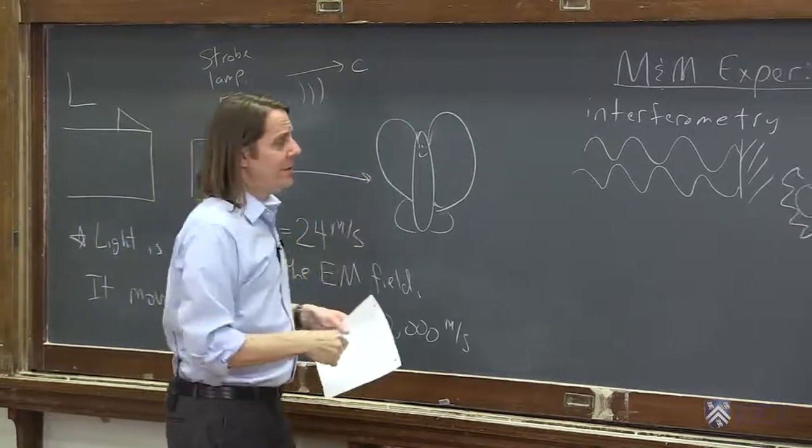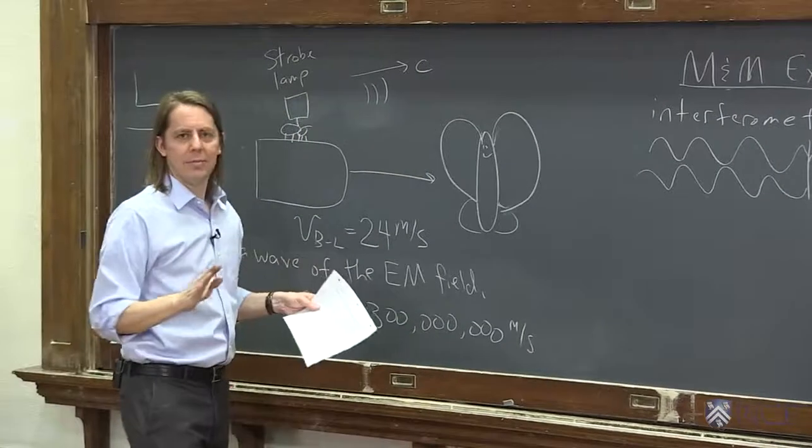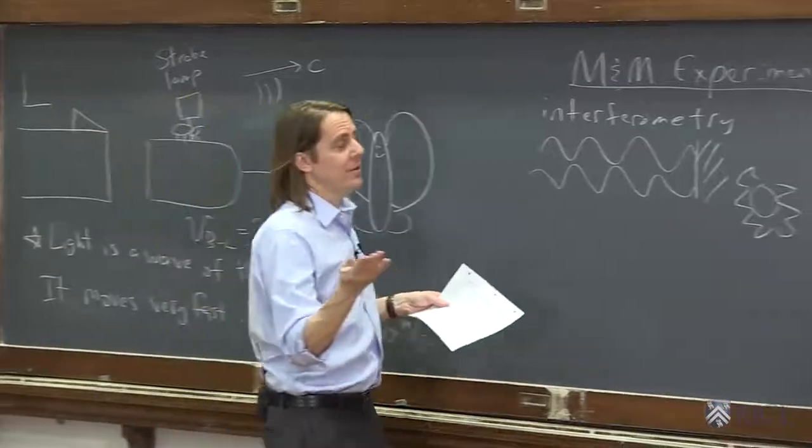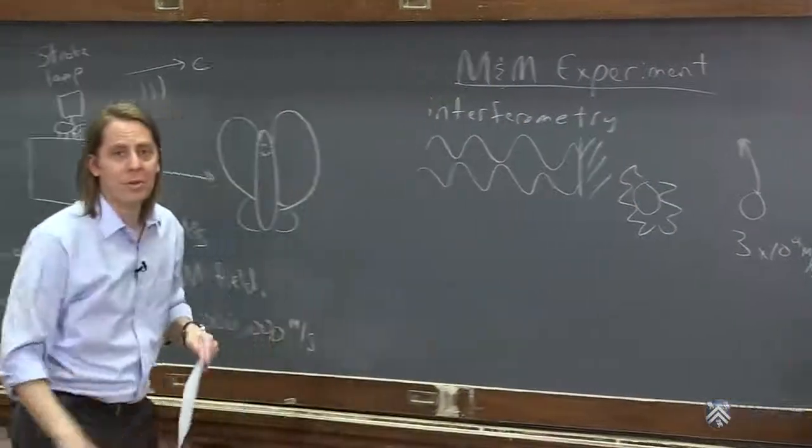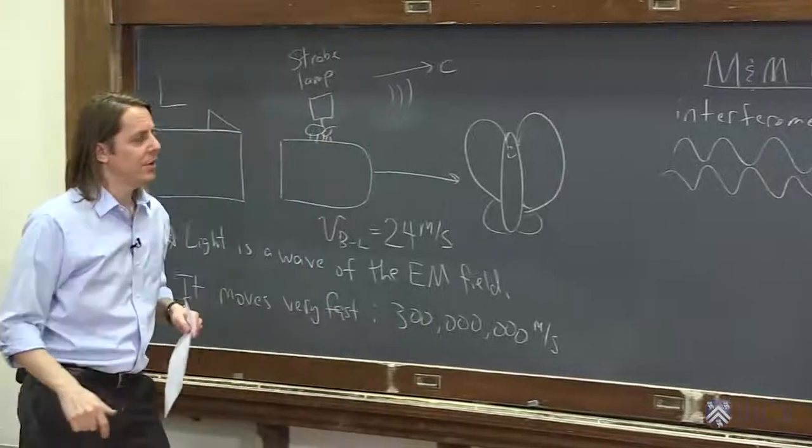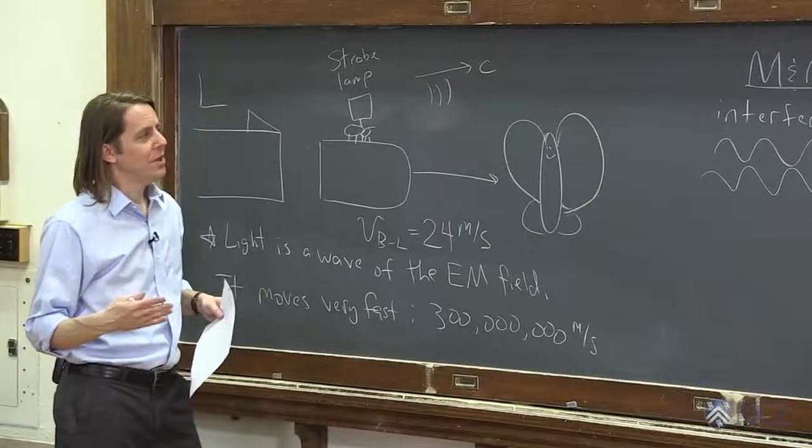So M&M did that, turned it 90 degrees, and saw absolutely nothing. They had a pretty good idea what they should see, because they know the speed of light, and they knew the speed of the Earth, presuming we're moving through an ether. But they got no results at all, which implies that there is no ether.